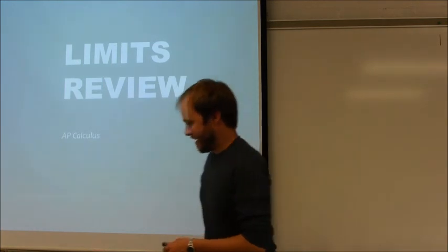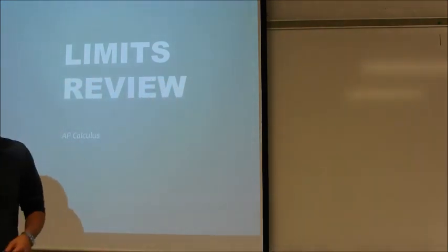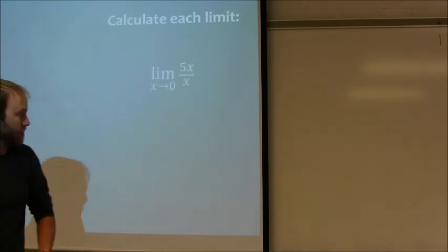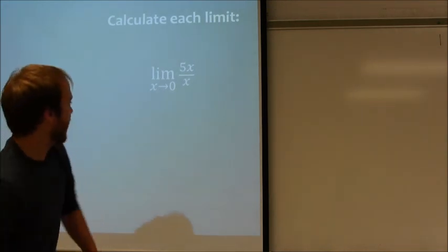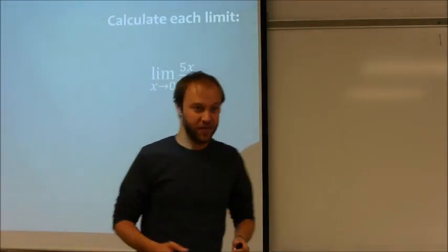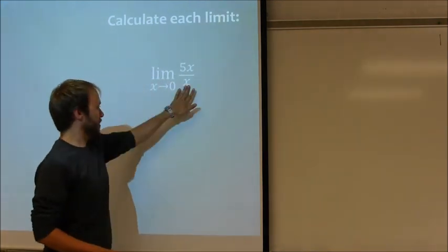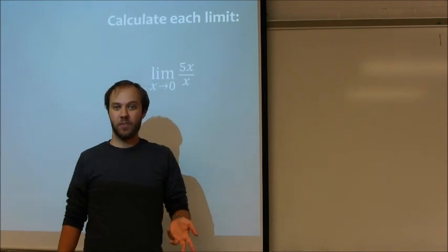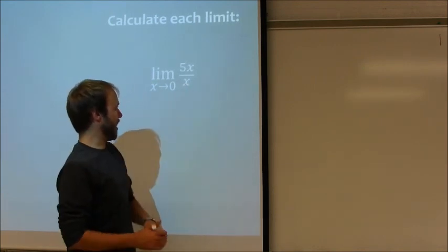The first limits problem I'm going to be looking at today is one involving finding the limit as x approaches 0 of 5x over x. This should be a very straightforward problem. The big thing you're dealing with here is if you substitute at this point, x is going to be 0, you're going to get a 0 in the denominator.